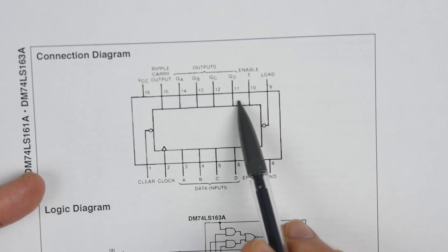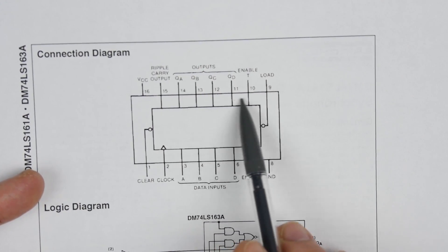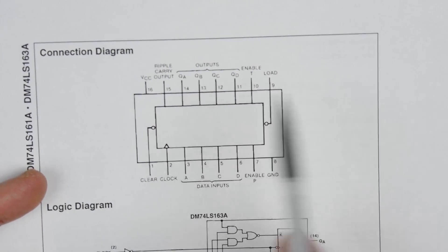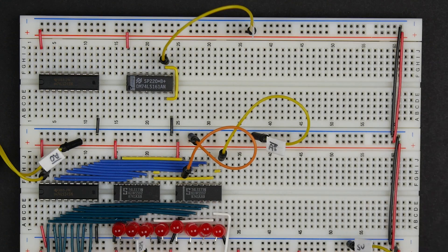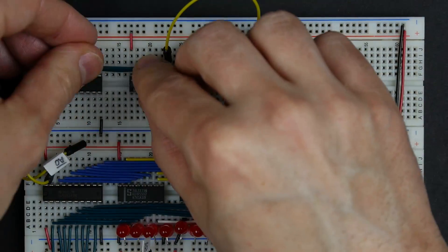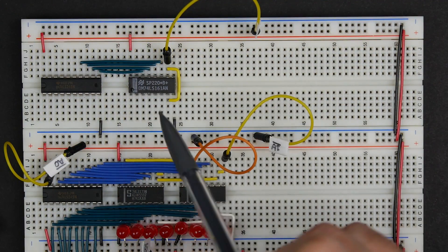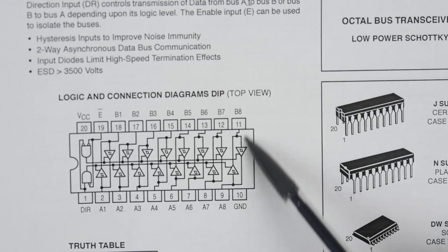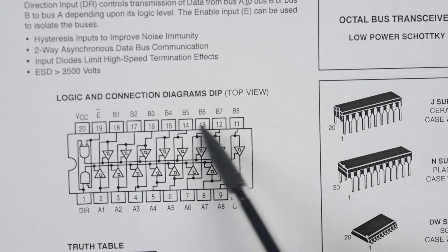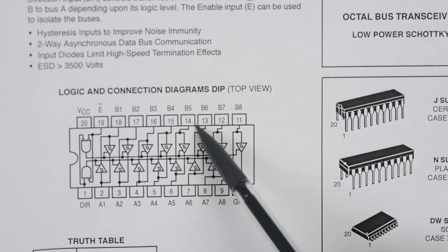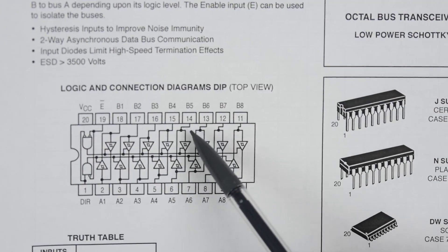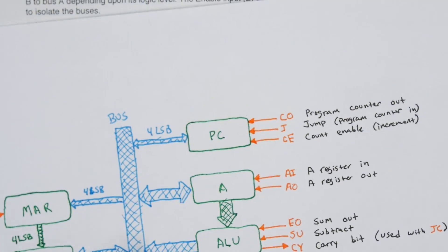Next I'll hook up the outputs of the 74LS161, which are pins 11 through 14. Those outputs we want to go through the 74LS245. So that connects the outputs of the 74LS161 counter to our tri-state buffers. It's connecting it to pins 11 through 14 here. That allows us to implement our program counter out signal.